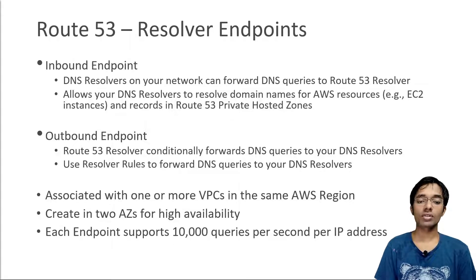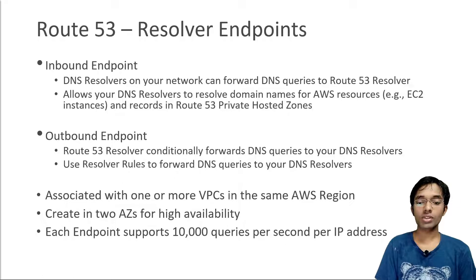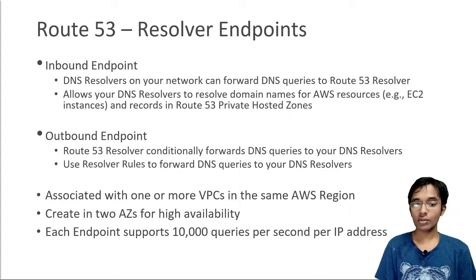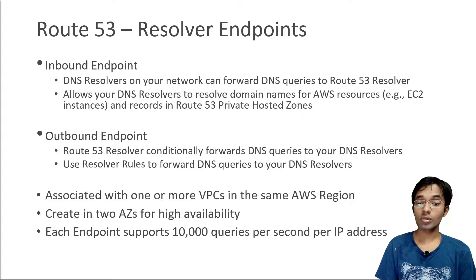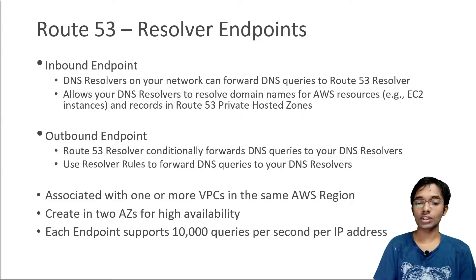Inbound endpoints allow DNS resolvers on your external networks to forward DNS queries to your Route 53 resolver and answer these queries. They help resolve domain names for resources on AWS, such as EC2 instances or records you create in your Route 53 private hosted zones. Outbound endpoints conditionally forward DNS queries to your on-premise DNS resolvers, and for this we create resolver rules. These endpoints are associated with one or more VPCs within the same region and are created in two availability zones for high availability.